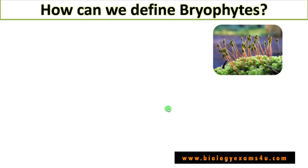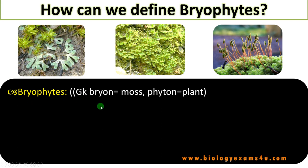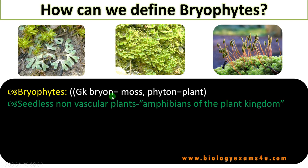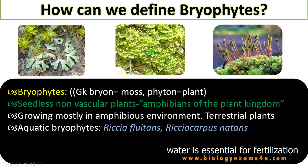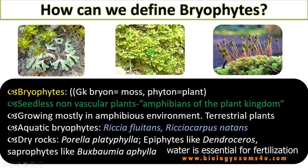How can we define bryophytes? The etymology of bryophytes: bryon means moss, phyton means plant — so moss-like plants. They are seedless, non-vascular plants often called the amphibians of the plant kingdom because of their amphibious habitat. They prefer to grow in amphibious environments, mostly terrestrial plants. There are some exceptions like Riccia fluitans and Ricciocarpus natans, both are aquatic bryophytes. Some live on dry rocks like Porella, some are epiphytes like Dendoceros, and rarely there are saprophytes like Buxbomia.